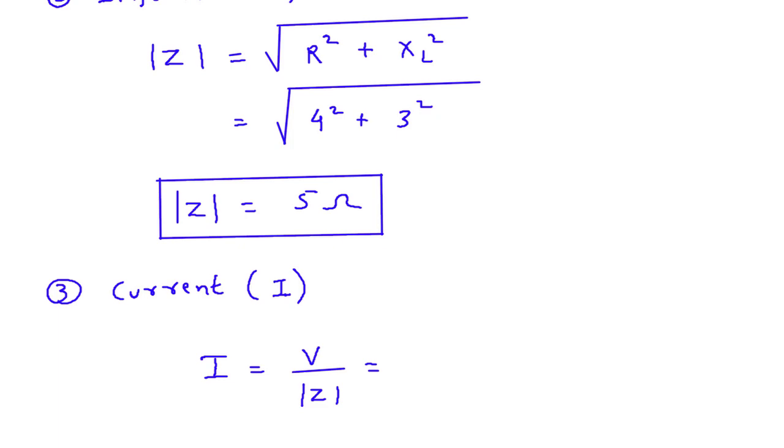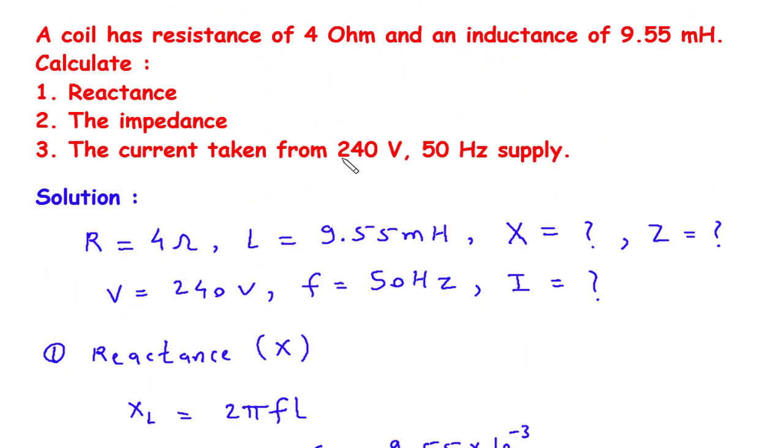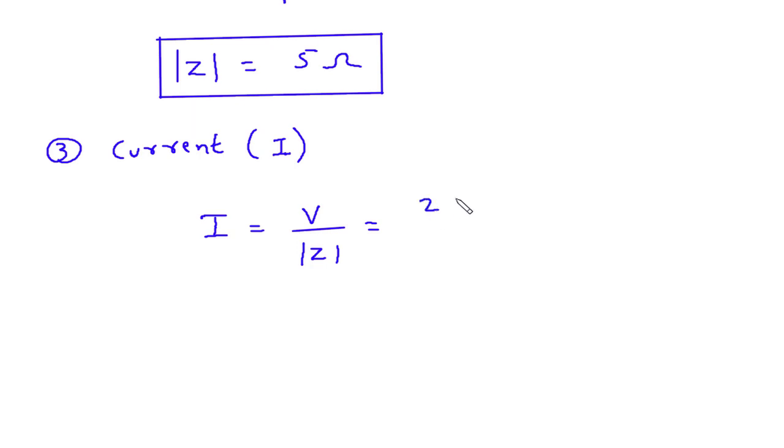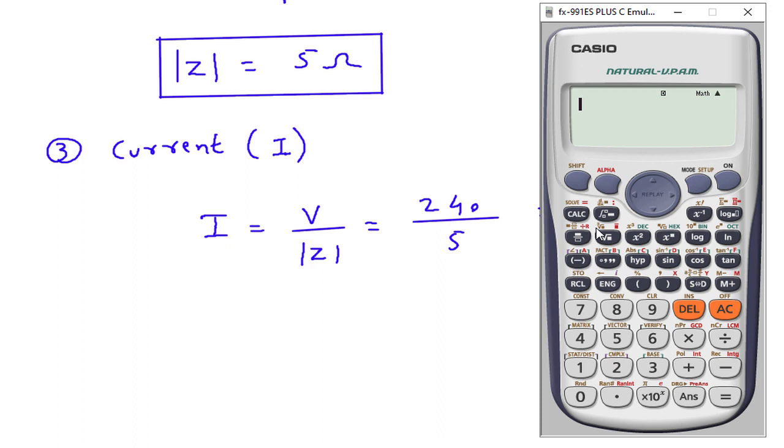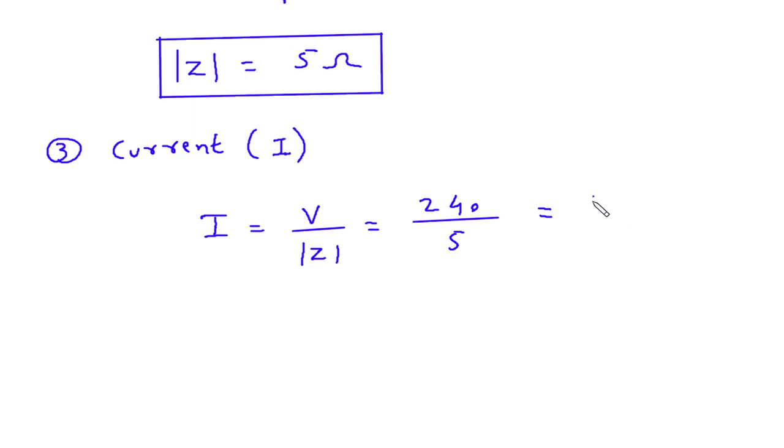So the value of voltage is 240 volt. So this will be 240 divided by magnitude of Z, or impedance value is 5. So this will be 240 divided by 5. So it is 48 ampere. Therefore current I is equal to 48 ampere.